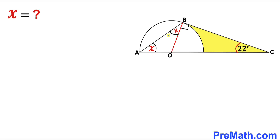Now let's focus on the whole angle ABC. That is going to be the sum of angle x and this 90 degree angle, so the whole angle ABC becomes x plus 90 degrees.